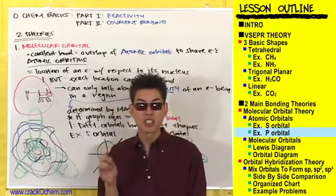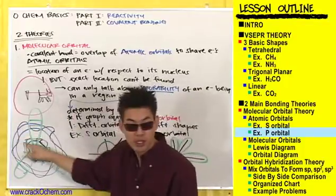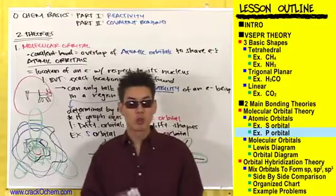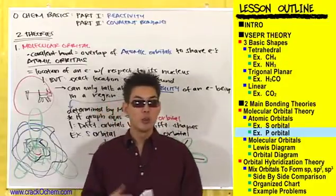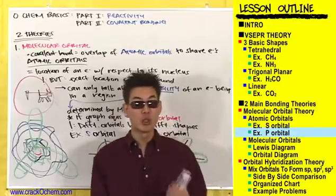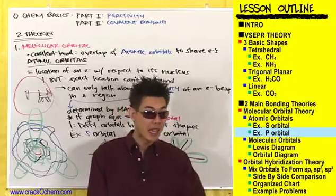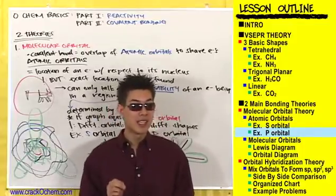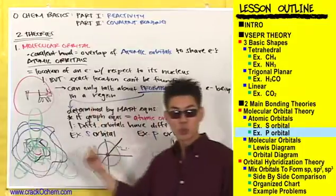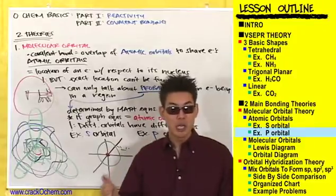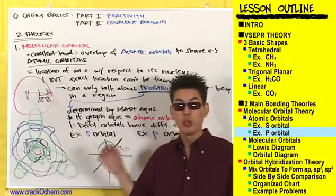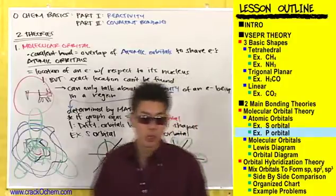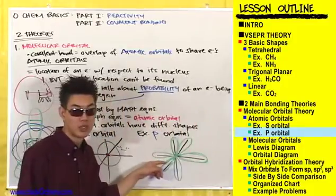Just realize that there is a second half to each of these orbitals. To recap: an atomic orbital is our best guess of the location of an electron in an atom with respect to its nucleus. We make this guess based on probability equations that we graph out, and different types of orbitals have different equations which yield different shaped regions.